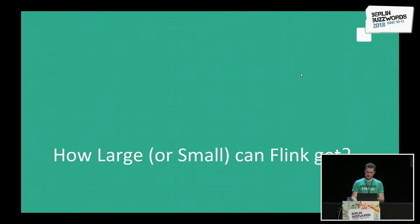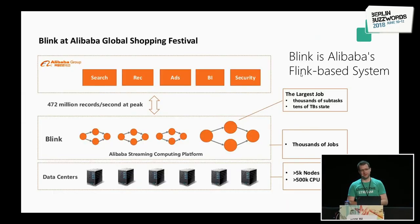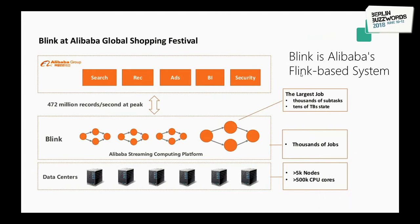How large or small can Flink get? Arguably, the biggest user of Flink is Alibaba. They use Flink to power parts of their system during Singles Day on the 11th of November. At peak, roughly 470 million records per second are processed through Blink — their fork of Flink with a few patches on top — though they are continuously contributing back, so the difference between Blink and Flink is getting less and less. They run thousands of jobs on clusters of over 5,000 nodes with 500,000 CPU cores.